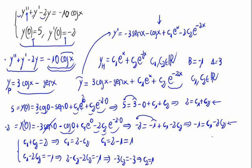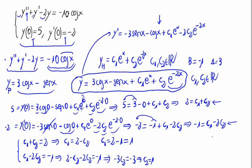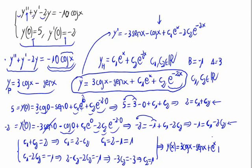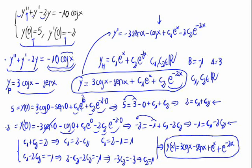Substituting c₁ = 1 and c₂ = 1 into the general solution, the complete solution to the initial conditions problem is: y = 3·cos(x) - sin(x) + e^x + e^(-2x).